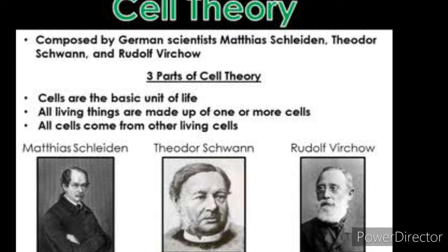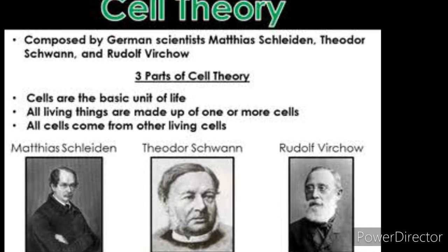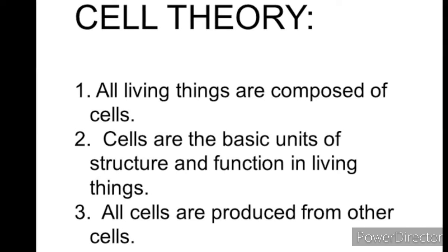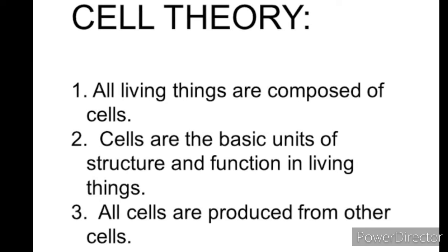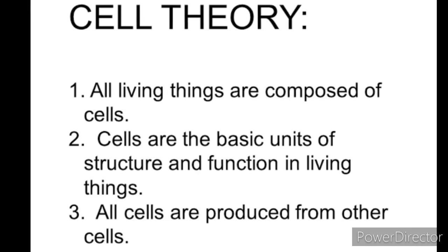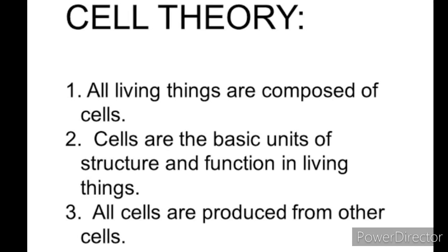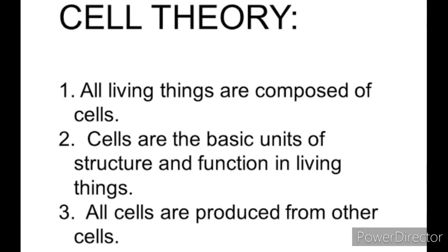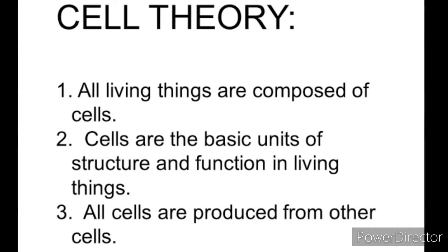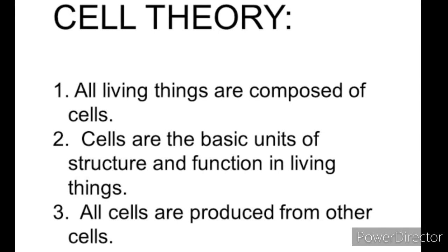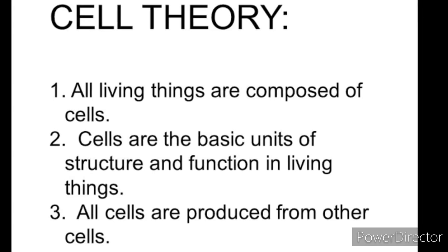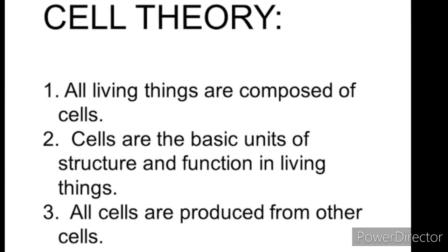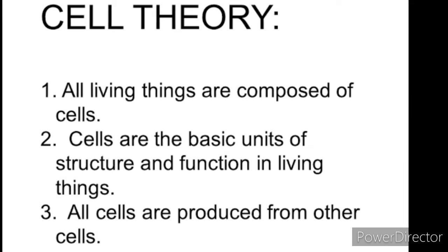Later, Rudolf Virchow modified the cell theory as understood today. The main cardinal points of the cell theory are: all living organisms are composed of cells and products of cells, meaning every organism is composed of cells and the existence of the cell depends upon products of the cell such as proteins and other biomolecules. The next point is that all cells arise from pre-existing cells, which gives us information about cell division — a new cell arises from an old cell.